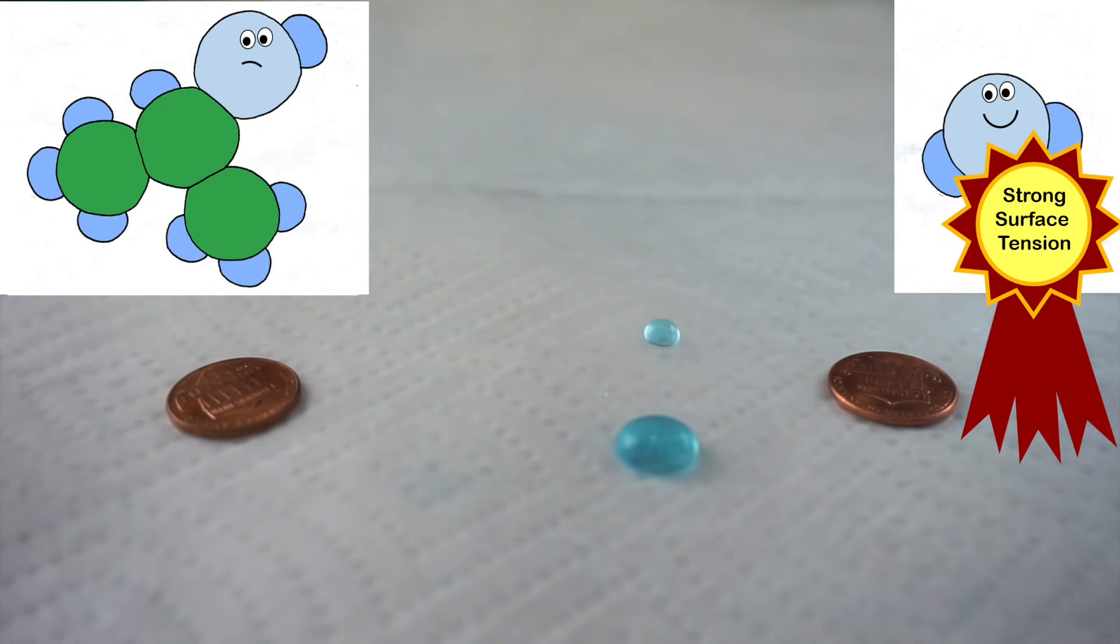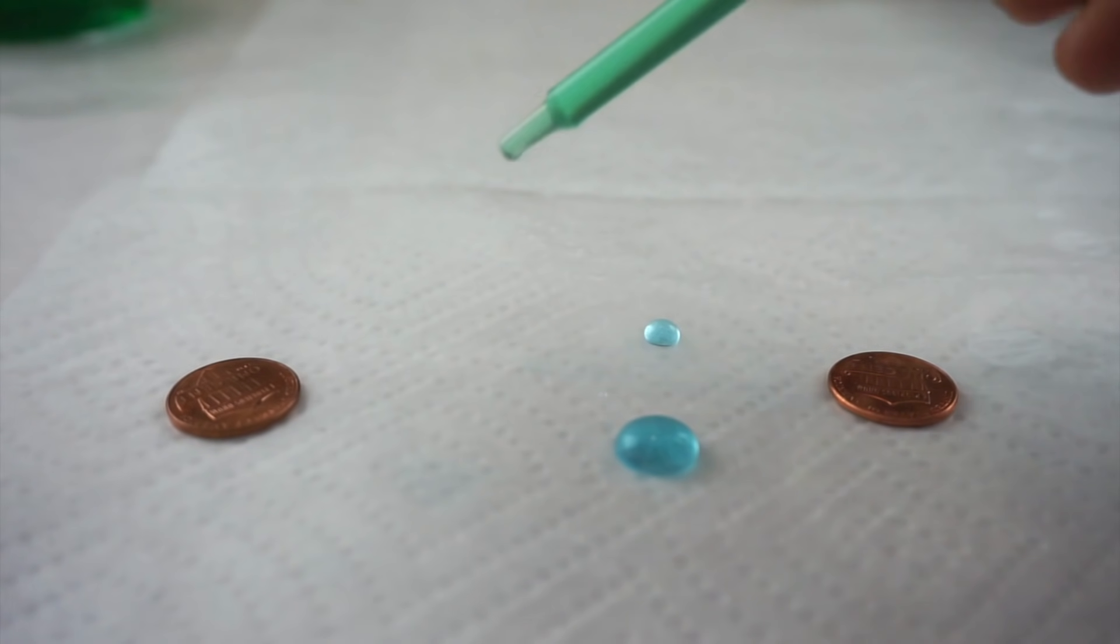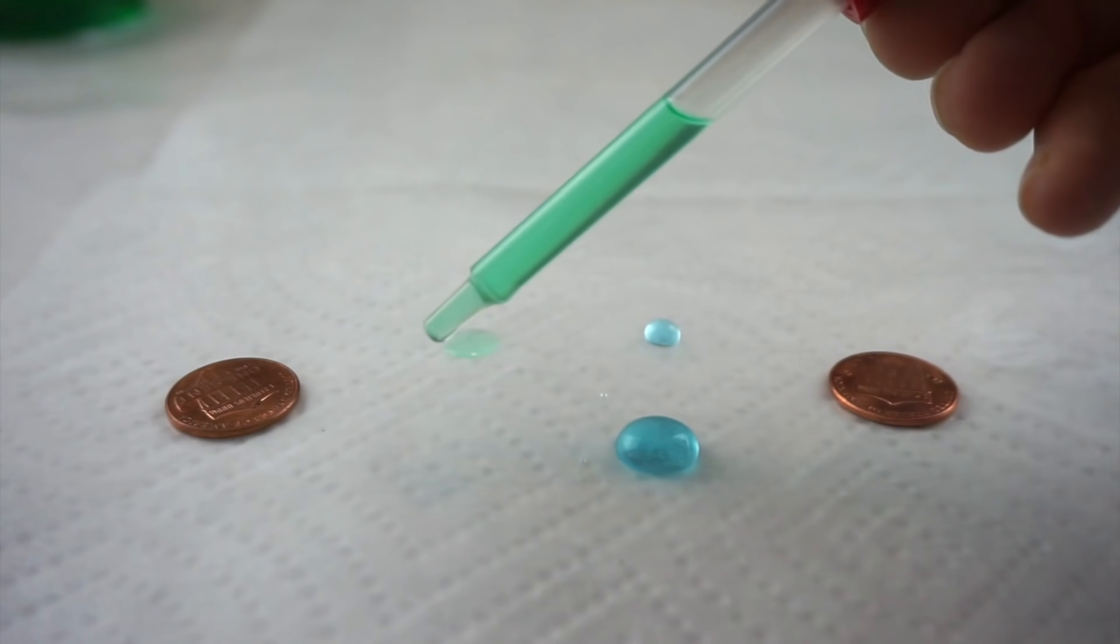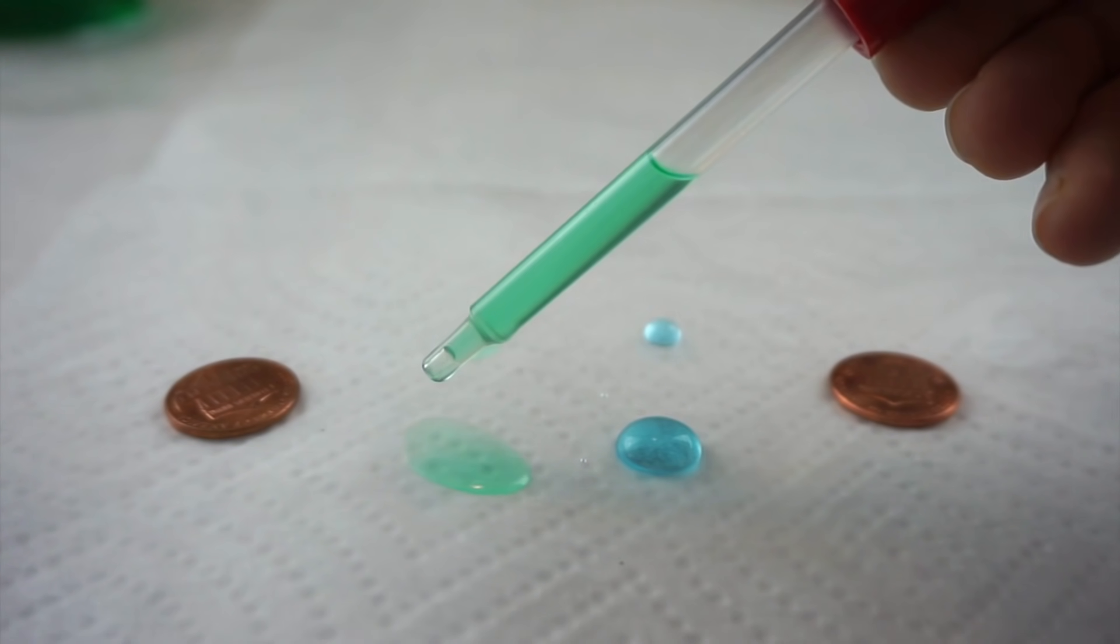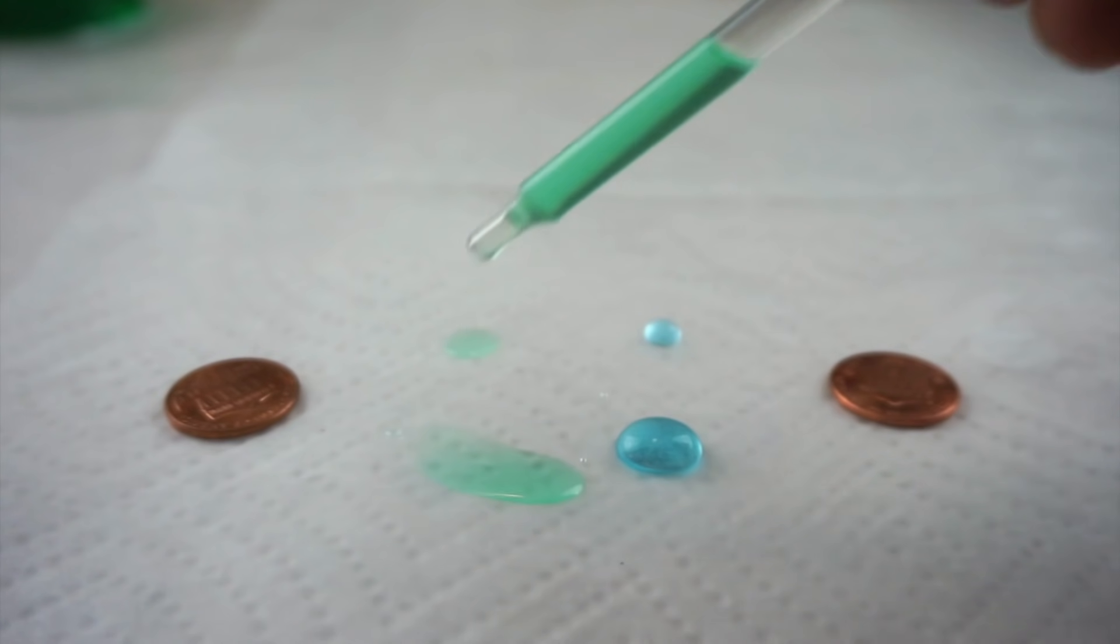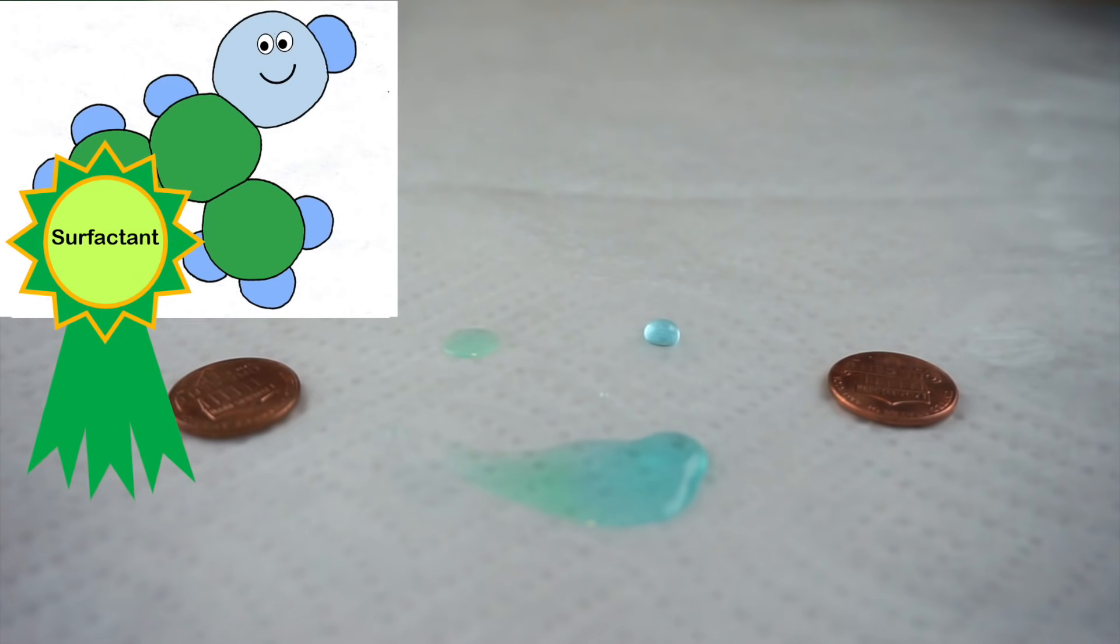But rubbing alcohol is water soluble. That means that these two liquids can mix together. And when they do, the surface tension of water is going to change dramatically. Watch this. Boom! The previously strong surface tension became weak, just like that.